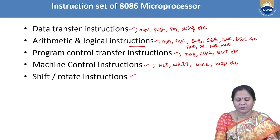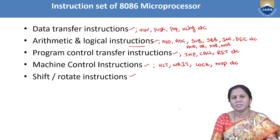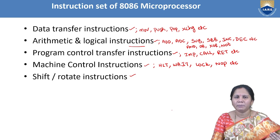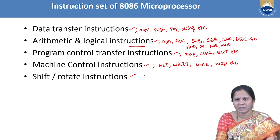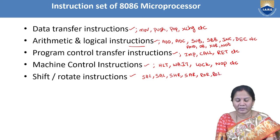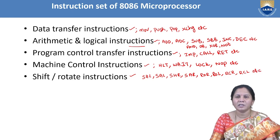The next classification is shift and rotate instructions. Using these instructions, shifting and rotating operations can be performed — either left shift or right shift, and rotating either left or right — performed only bitwise. Examples include shift left, shift arithmetic left, shift right, shift arithmetic right, rotate right, rotate left, rotate right with carry, and rotate left with carry.